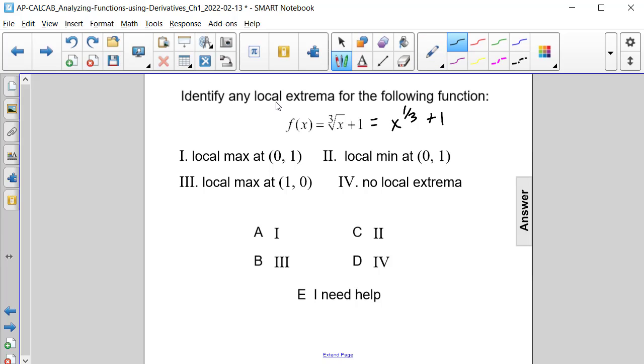Now the first step in order to determine where local extrema occur is to take the derivative. So f prime of x is going to be, and we can use the power rule for this one. We will have 1/3rd x raised to the negative 2/3rds power, and then the derivative of 1 is 0, so we don't have to worry about that.